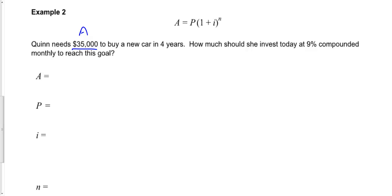So he wants to buy a car in four years. How much should she invest today? Today means at present. At 9%, and 9% is 0.09, compounded monthly. Monthly is 12 times per year to reach this goal.